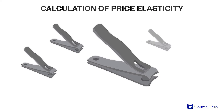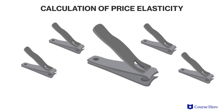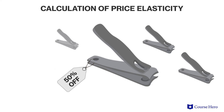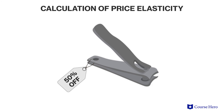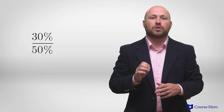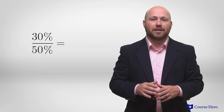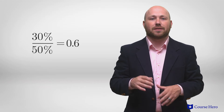For example, if the price of fingernail clippers suddenly dropped by 50%, the number of fingernail clippers produced would also fall. If the quantity supplied decreased by 30%, the price elasticity of supply would be 30% divided by 50%, which is an elasticity of 0.6.